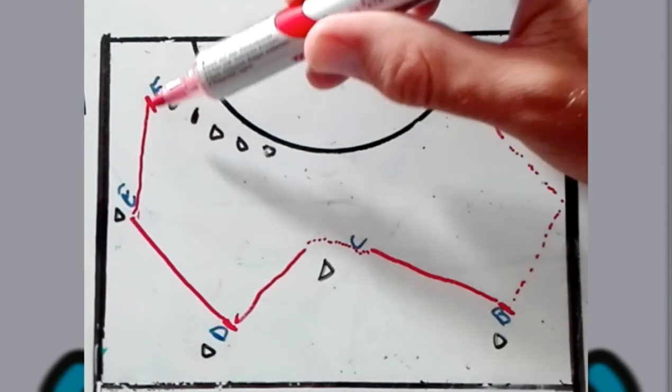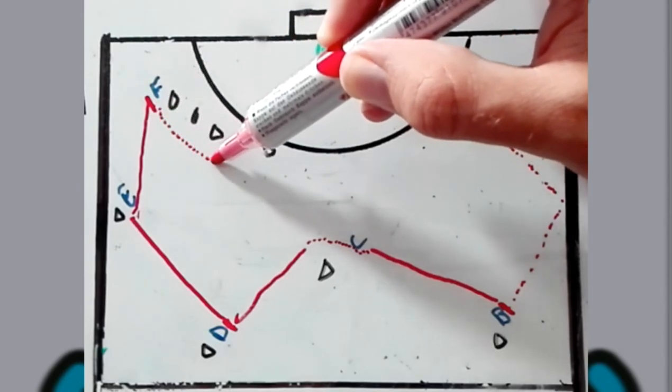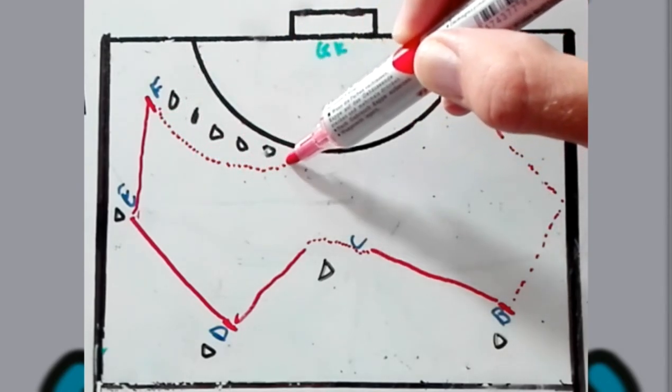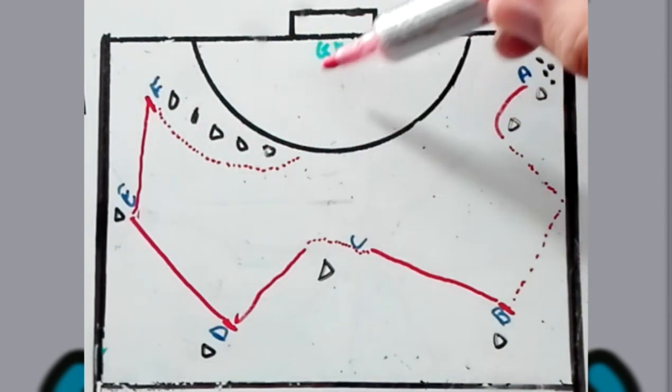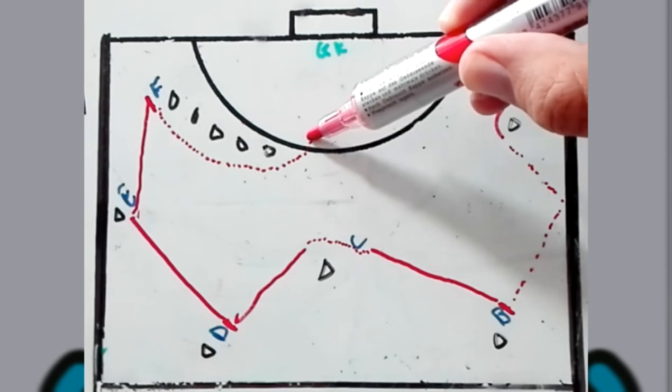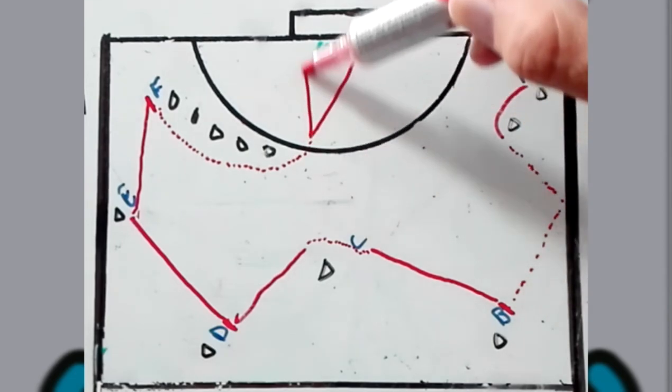As soon as player F gets the ball, he's then going to make a nice big arc around these cones, trying to keep it on his stick. As soon as he gets to circle, he's then going to try and score a goal wherever he wants to.